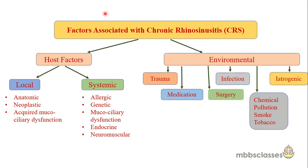Factors associated with chronic rhinosinusitis are sub-classified into host factors and environmental factors. Host factors are further classified as local — including anatomical factors of the nose or paranasal sinuses, neoplastic obstruction, or acquired mucociliary dysfunction — and systemic, including allergic, genetic systemic mucociliary dysfunction, endocrine diseases, and neuromuscular disorders. Environmental factors include trauma, medications, infection, surgery, chemicals, pollutants, tobacco smoke, and cases of odontogenic sinusitis.